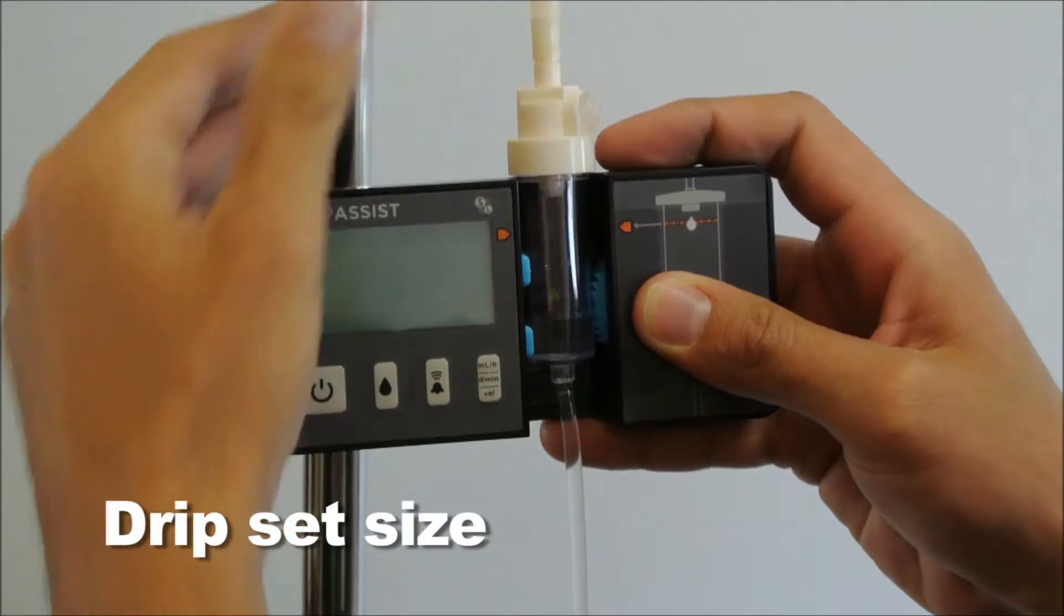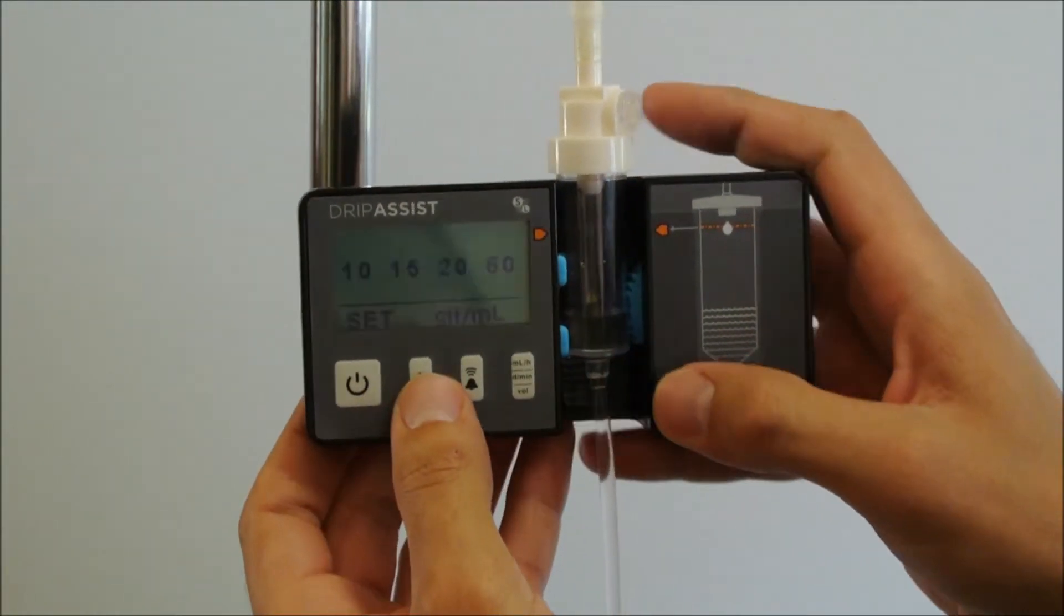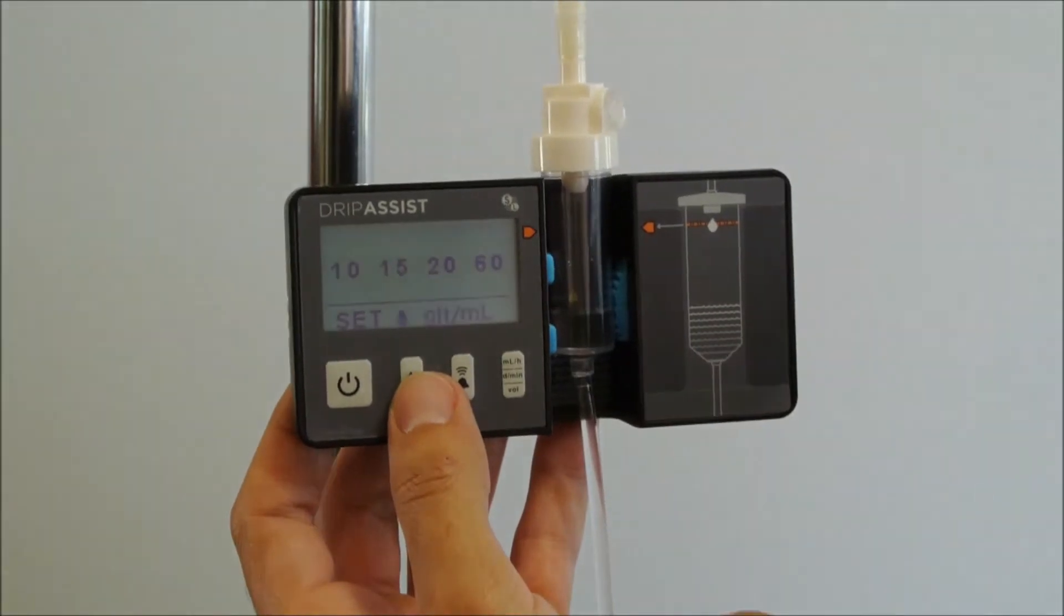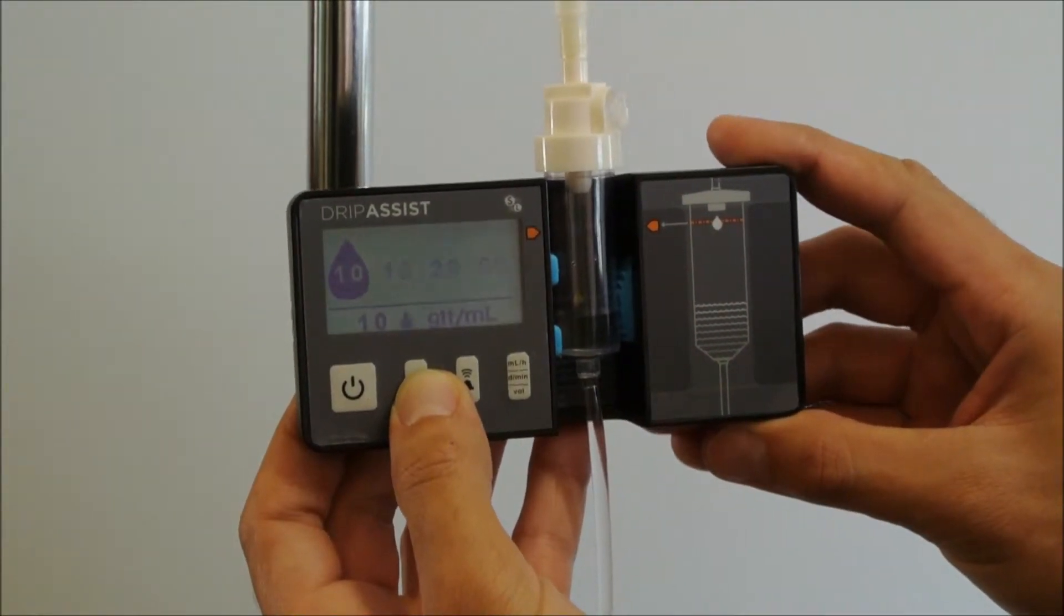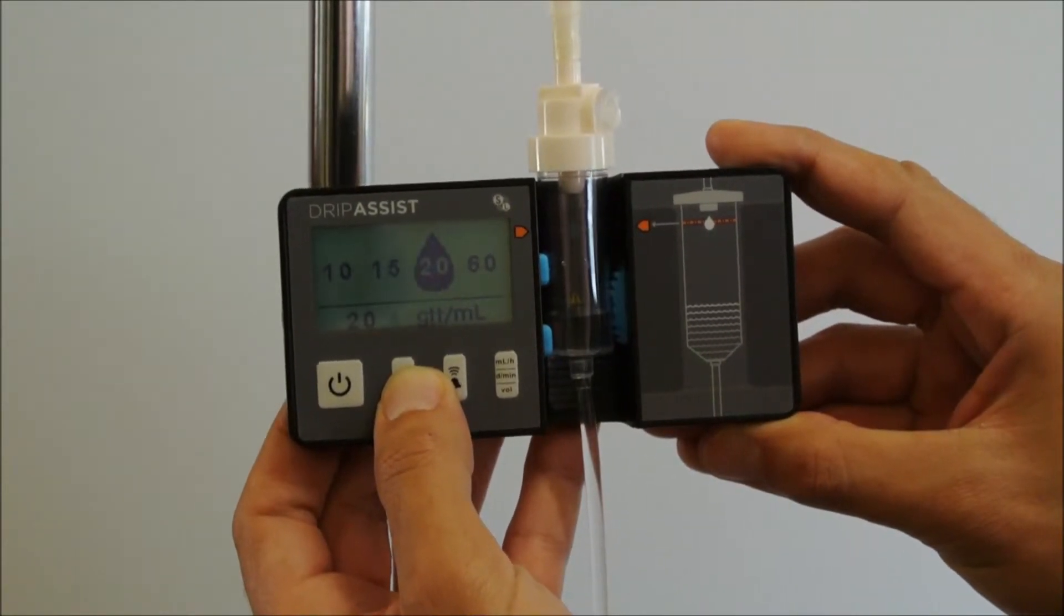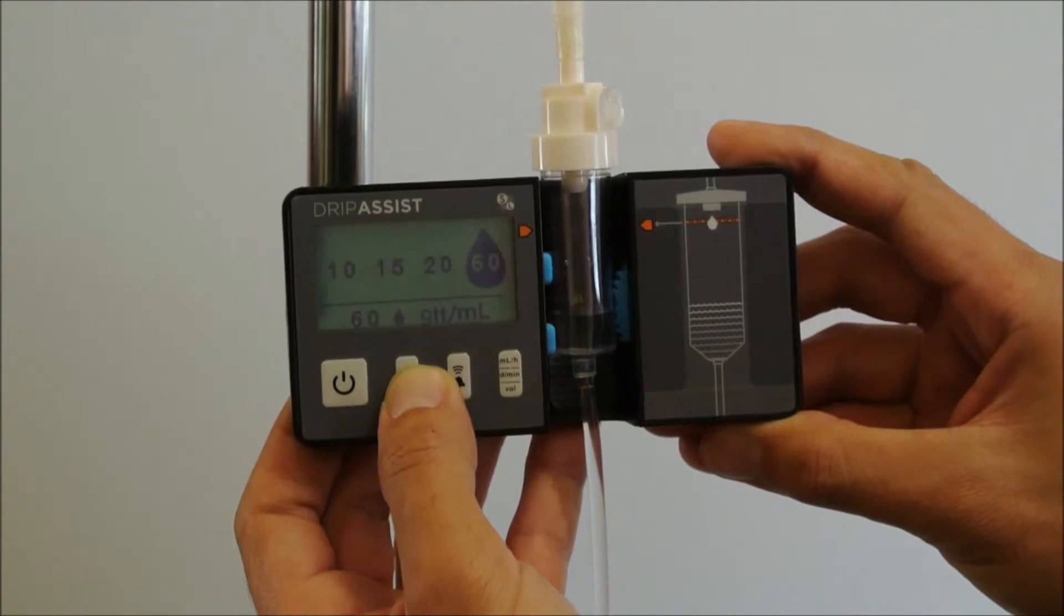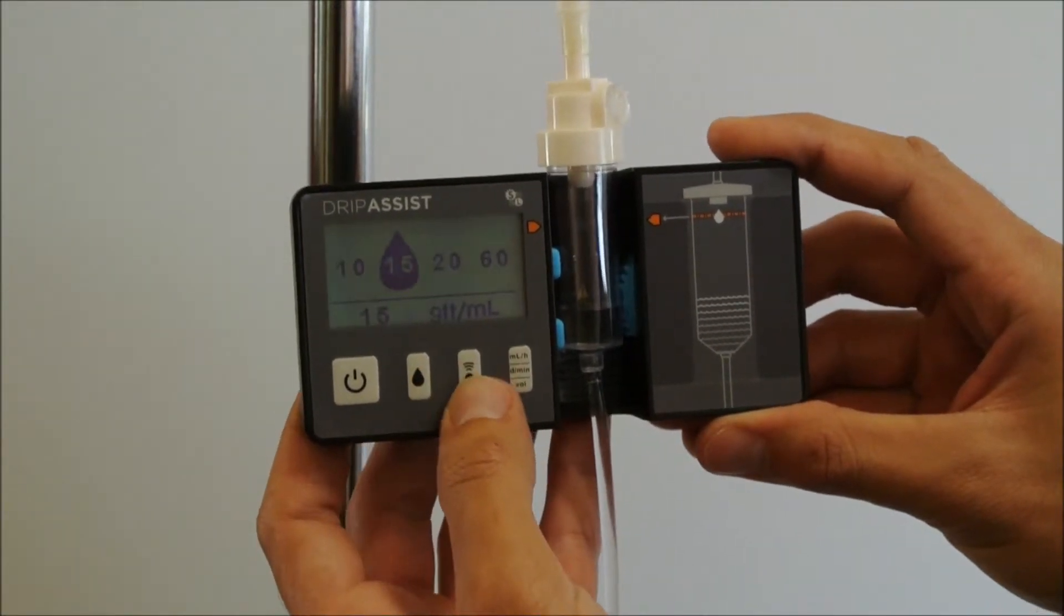Turn on the device with the button on the far left. With the second button, select your drip factor. The drip assist accommodates 10, 15, 20, and 60 GTT sizes. The bottom left hand part of the screen will remind you of the drip factor you selected. This tubing set is a 15.